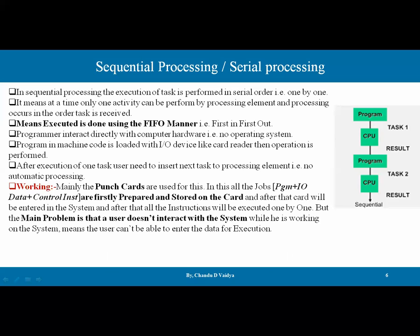The main working medium here is punch cards. Punch cards are sheets with invisible ink marks or punch holes. When passed through a light, the holes translate to 0s and 1s. A set of punch cards represents a set of instructions. The jobs — meaning the program plus I/O data plus control instructions — are first prepared and stored on the cards. The cards are then entered into the system and all instructions are executed one by one. The main problem is that the user doesn't interact with the operating system directly because there is essentially no OS, and the user cannot intervene while the system is working.